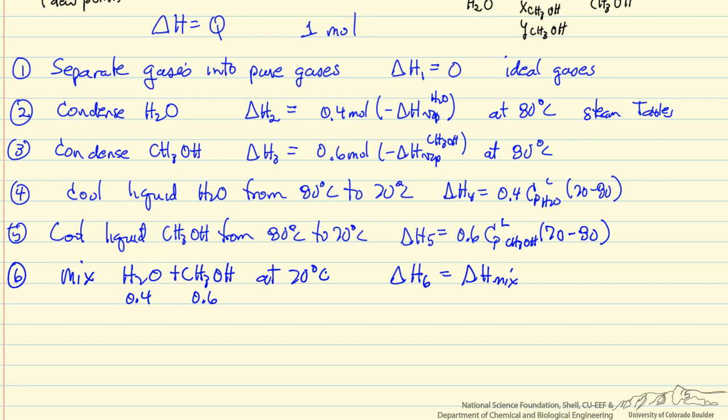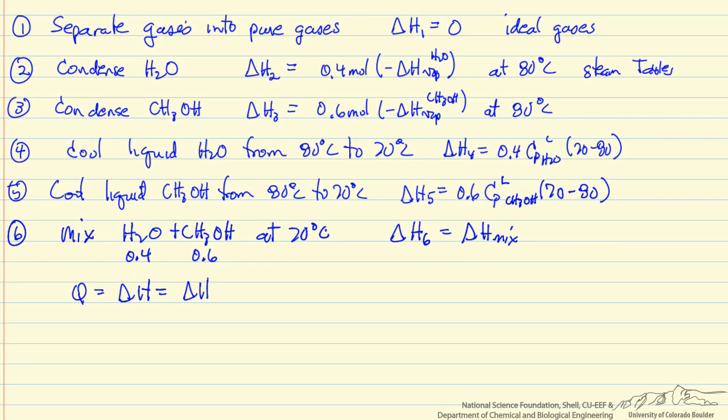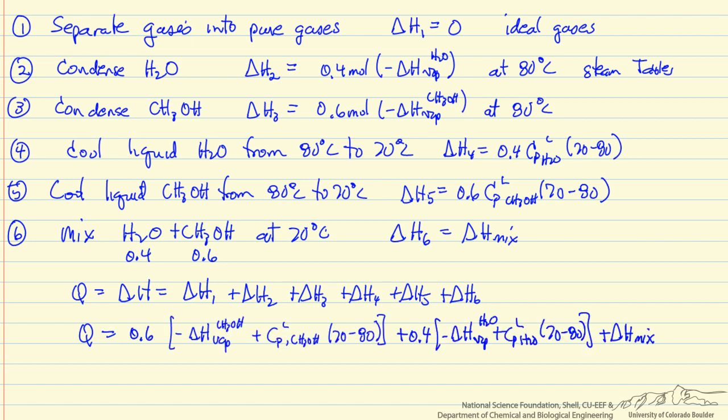Then our overall Q is our overall delta H, which is just the sum of the delta H's. We can substitute in for each of the values that we calculated, and we can group together the methanol and the water terms. So we have our final answer.